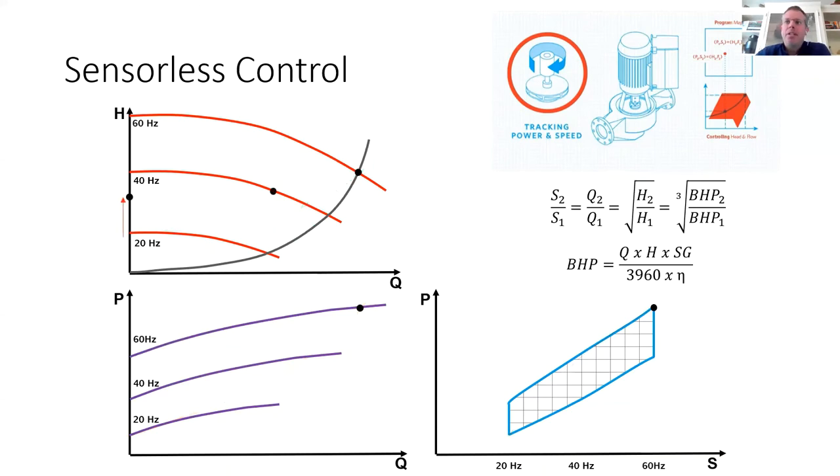Additionally, if you have to make adjustments out in the field, if the minimum head required needs to be adjusted, we can program a new minimum head set point into the controller and it's going to draw a new quadratic control curve for the on-site conditions.